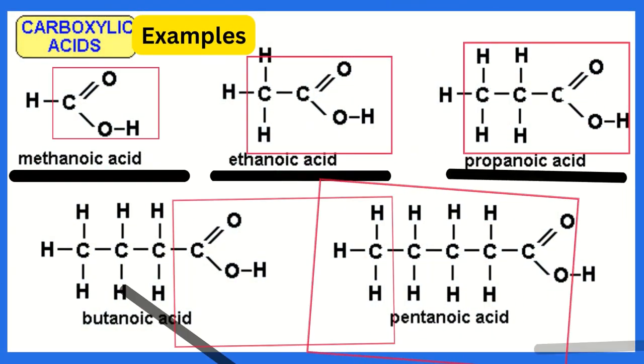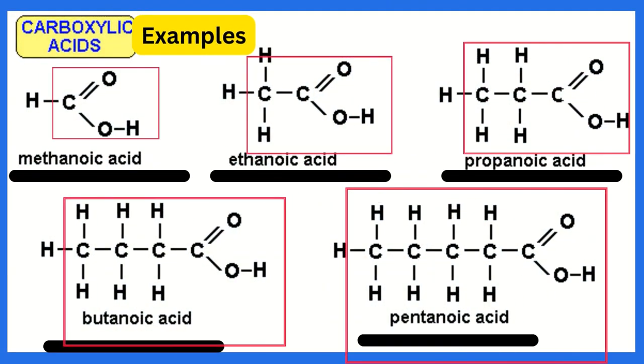Examples of carboxylic acid: COOH with one carbon called methanoic acid, COOH with two carbon called ethanoic acid, COOH with three carbon called propanoic acid, COOH with four carbon called butanoic acid, COOH with five carbon called pentanoic acid.